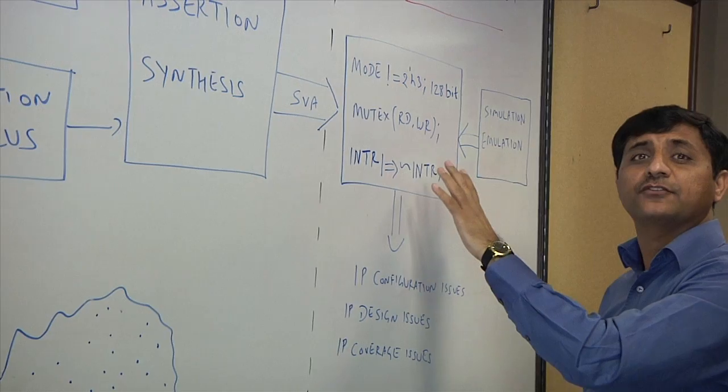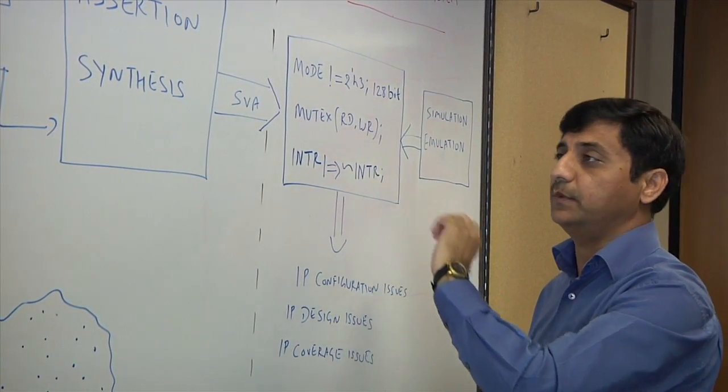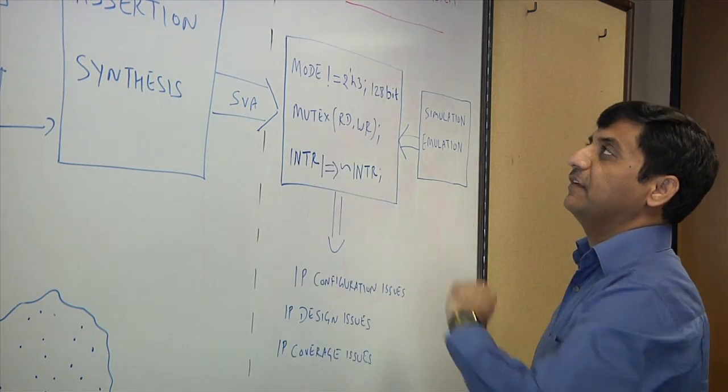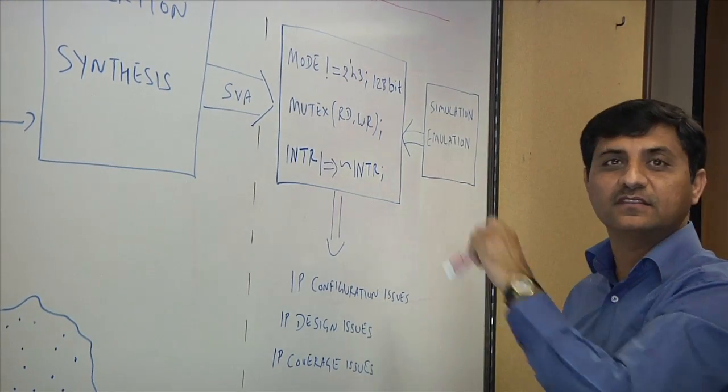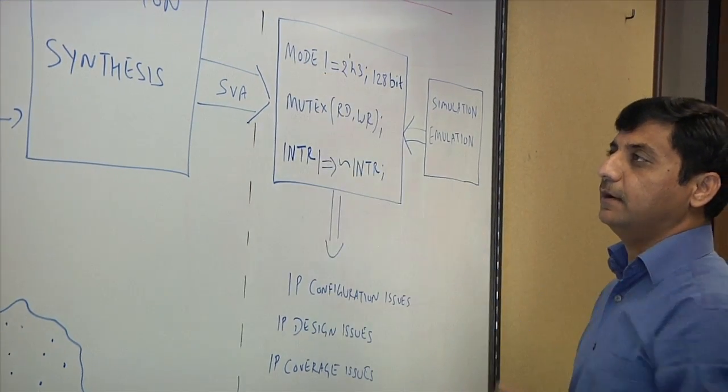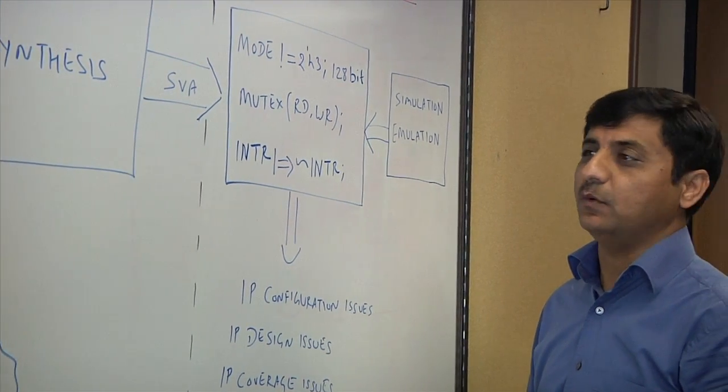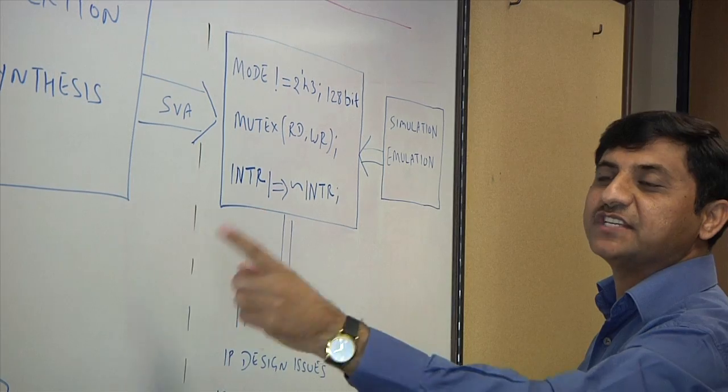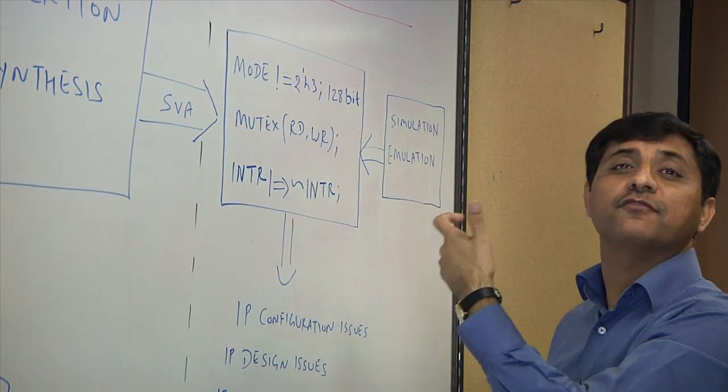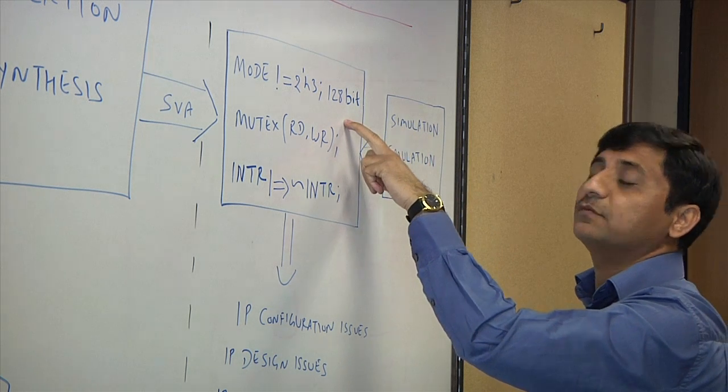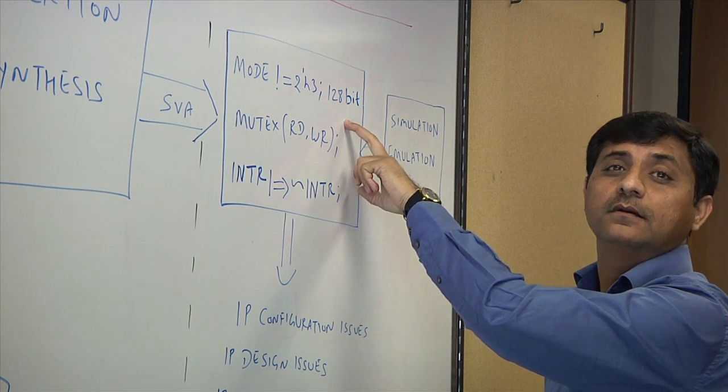So I have these three examples here to illustrate what kind of issues you can catch very easily with this methodology. So my first property here, again, now I'm crossing over from IP to SOC level and I'm describing these three properties. First property here says my mode is not equal to 2H3, hex 3. What it means is that when I was testing my IP at IP level, this was the behavior of my IP. It means, for example, this 128-bit mode was not supported for this IP.